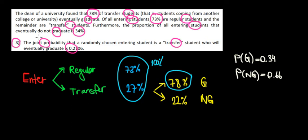Now when we're speaking about joint probability, joint has a keyword and that is 'and'. So we're dealing with the probability of being a transfer student and eventually graduating. That is the joint probability we're dealing with.